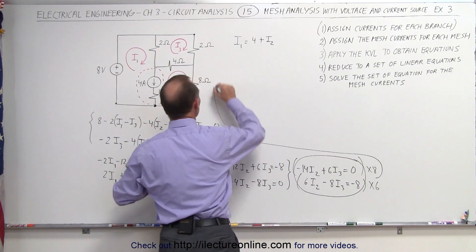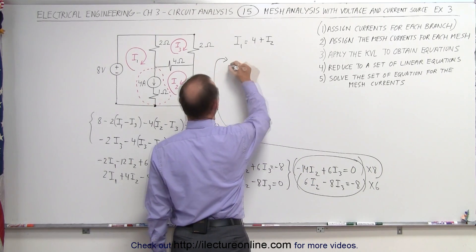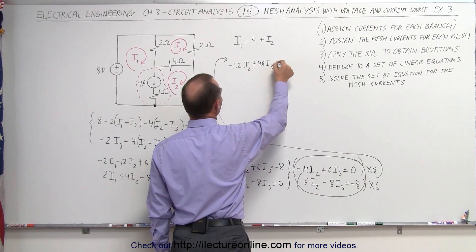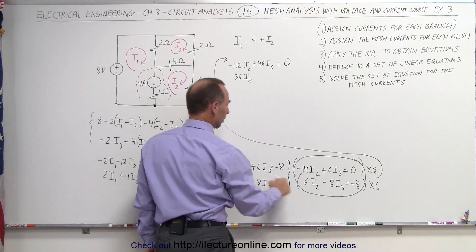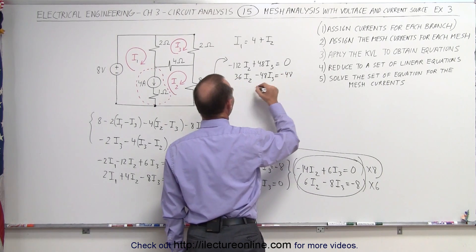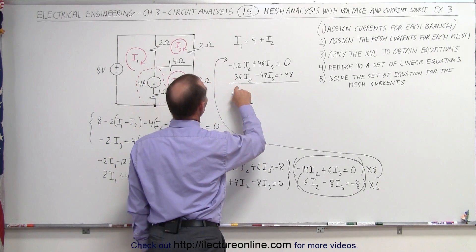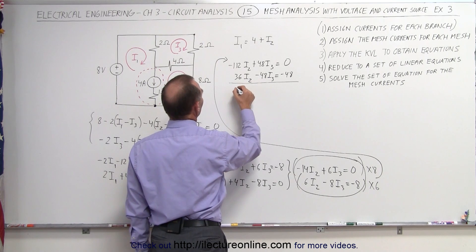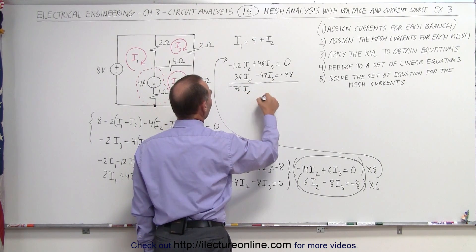So when I do that, I get the following. Multiply this times 8, 8 times 14, that's 32 plus 80, that's minus 112 I2. 6 times 8, 48, plus 48 I3 equals 0. The second equation, 6 times 6, that's 36 I2, minus 48 I3, is equal to minus 48. If I add the two equations together, we get 112 minus 36, that would be 64 plus 12, 74, 76. So minus 76 I2, the I3s drop out, equals minus 48.